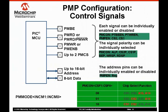The address pins can either be individually enabled or disabled. Depending on the mode, the data is transferred through separate data pins, or the data can be multiplexed with the address to conserve pins.